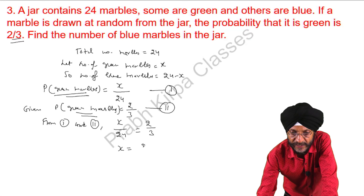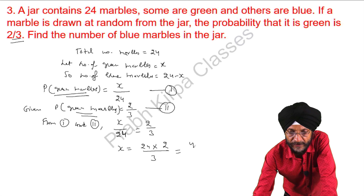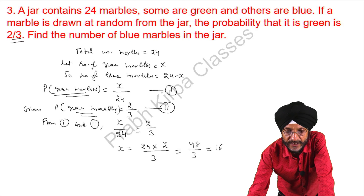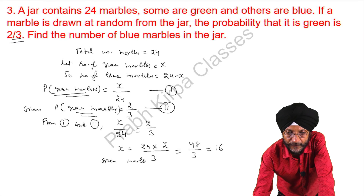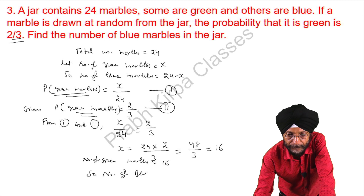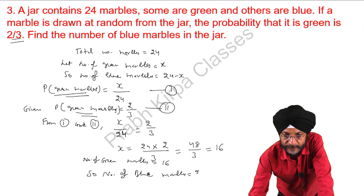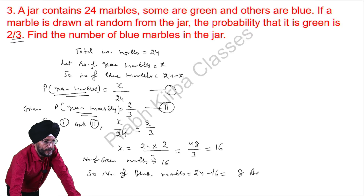Cross-multiplying: x equals 24 times 2 divided by 3, which gives 16. Here x represents the number of green marbles, so green marbles are 16. The number of blue marbles is 24 minus x, which is 24 minus 16, giving 8.